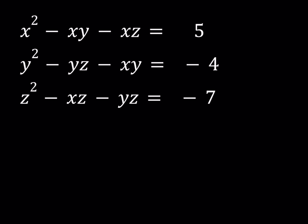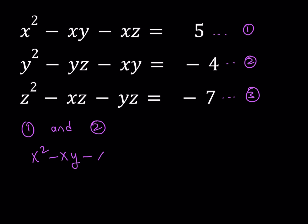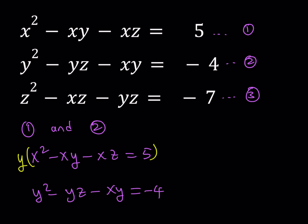So what are we going to do? I'm going to be working with a pair of equations every time. Let me go ahead and number these equations: number 1, number 2, and number 3. Let's take number 1 and number 2. Since the first equation starts with x squared and the second one starts with y squared, I'm going to take the first equation and multiply it by y, and the second equation I'll multiply by x.